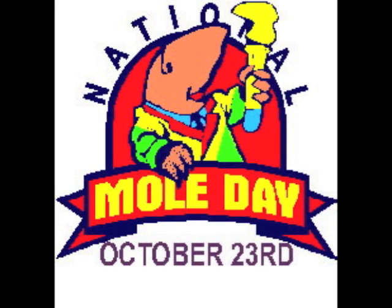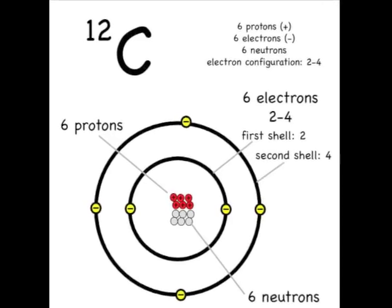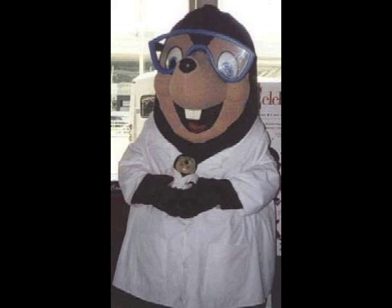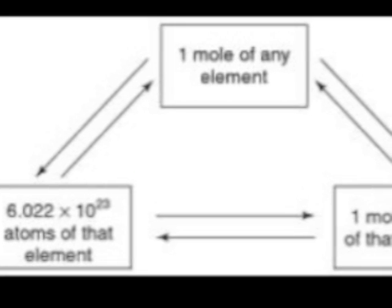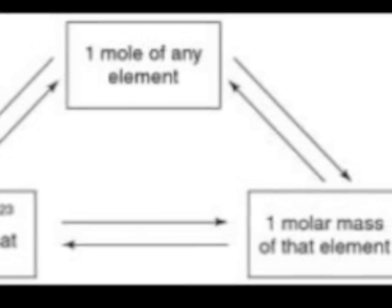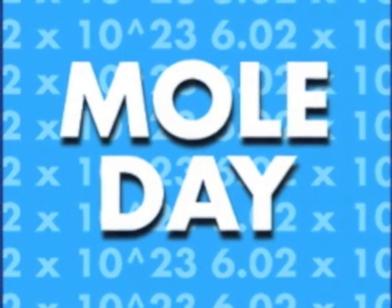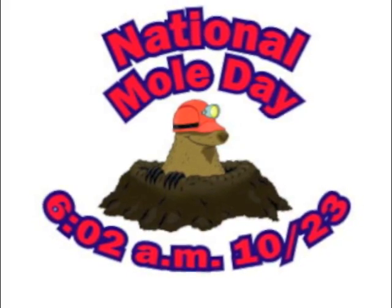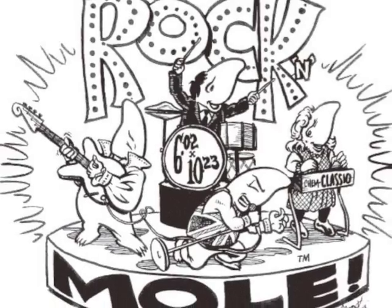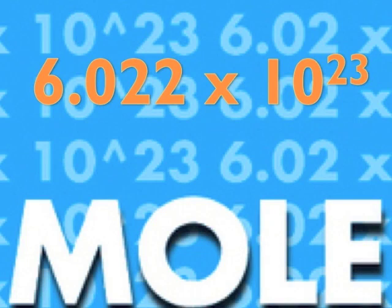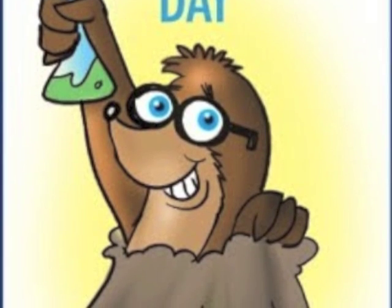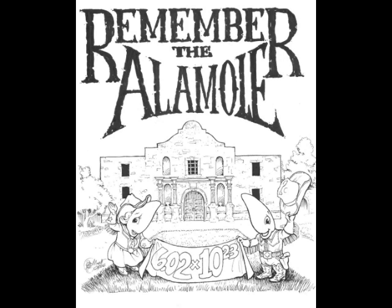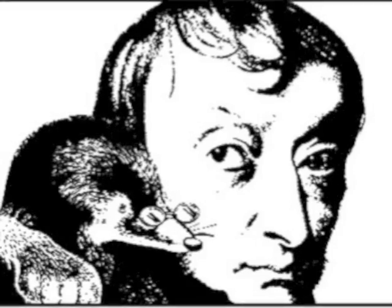Mole, mole, mole, mole. It's a mole, mole in the animal kingdom. Mole, mole, mole, mole. 6.022 times 10 to the 23rd. Once upon a time there lived a man who came up with the mole. 6.022 times 10 to the 23rd.